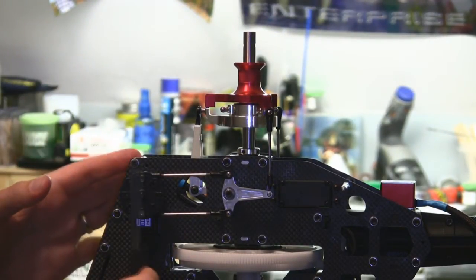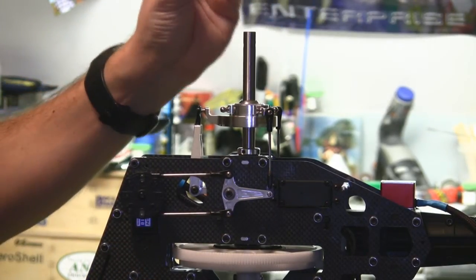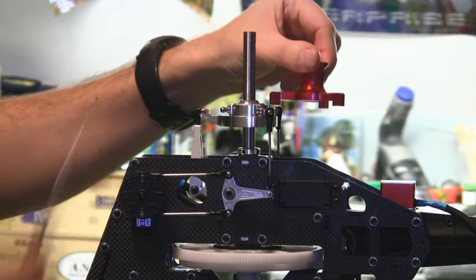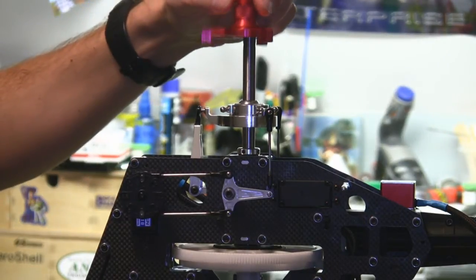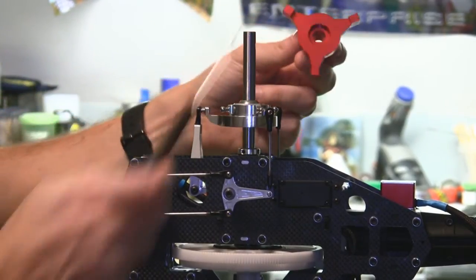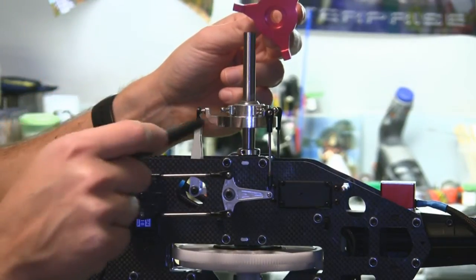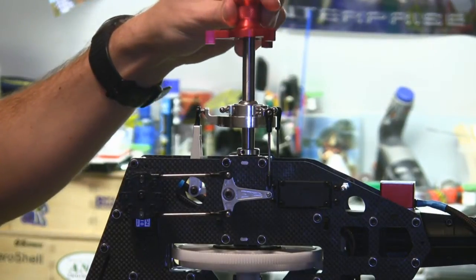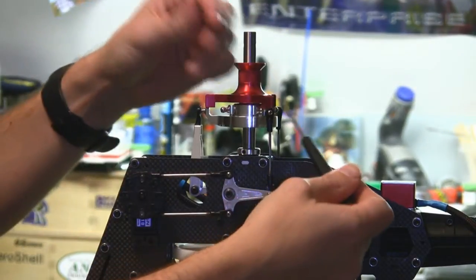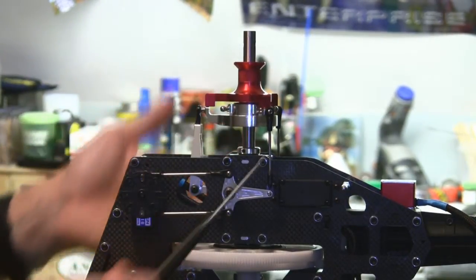And what I've done is I've dropped this swash leveling tool, which you can see right there. And you just pull off the head of the helicopter and you drop this tool down on the main shaft. And you can see this tool has three points which line up with the three arms of the 120 degree swash plate. And you drop the leveling tool down onto the swash. And each one of these three points should line up with three points on the swash.